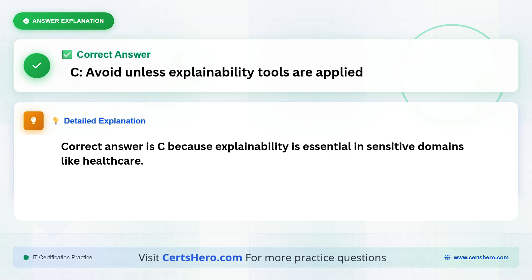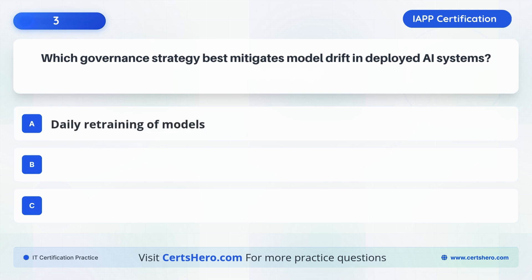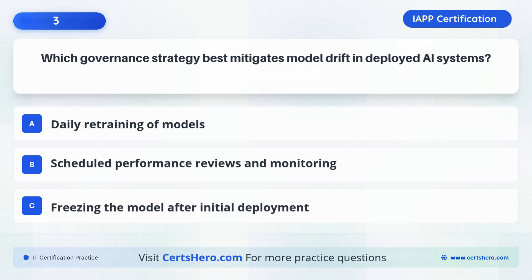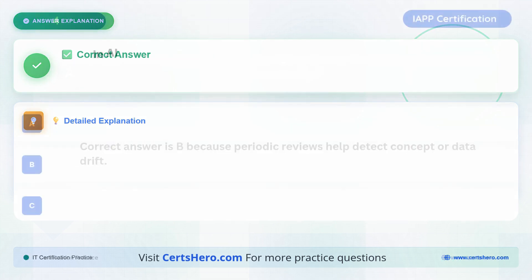Which governance strategy best mitigates model drift in deployed AI systems? The correct answer is B: Scheduled performance reviews and monitoring, because periodic reviews help detect concept or data drift.